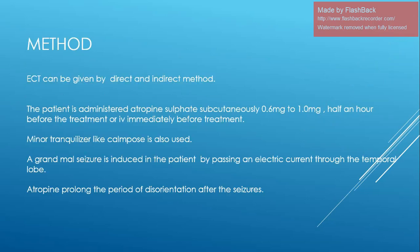ECT can be given by direct and indirect method. The patient is administered atropine sulfate subcutaneously 0.6 mg to 1 mg half an hour before the treatment, or IV immediately before treatment. Minor tranquilizers like diazepam are also used if necessary. A grand mal seizure is induced by passing an electric current through the temporal lobe. Eye drops prolong the period of disorientation after seizure.